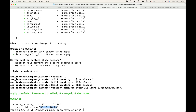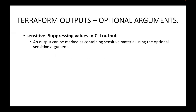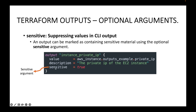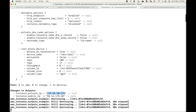An output can be marked as containing sensitive material using this optional sensitive argument. You tell Terraform that this is a sensitive value and it should not display it. Terraform will hide values marked as sensitive in the messages when you run the terraform plan or terraform apply command. Let's see an example — currently it is displaying the value, so let's wait for the destroy to complete.